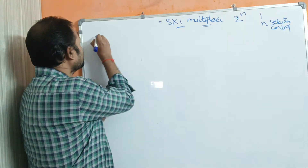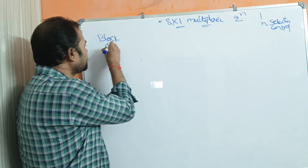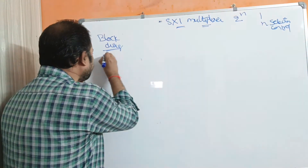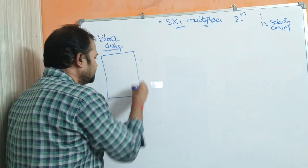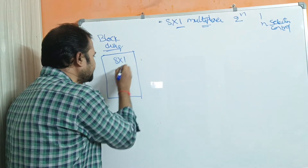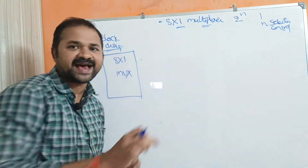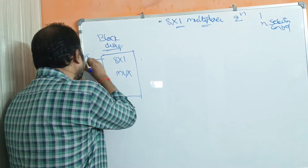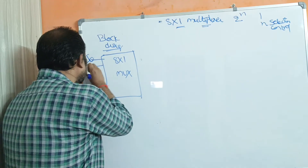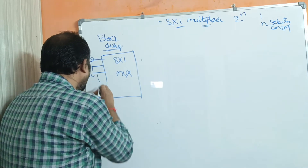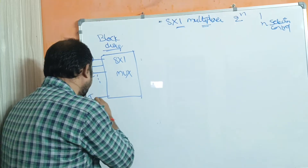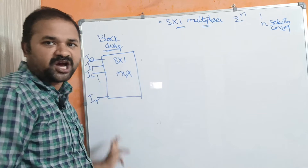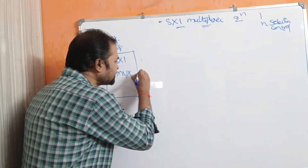Let us see the block diagram of the 8 by 1 multiplexer. The name itself specifies the meaning. An 8 by 1 multiplexer, also called a MUX, has 8 inputs and produces one output. The inputs are i0, i1, i2, and so on up to i7. So the multiplexer has 8 data inputs from i0 to i7 and produces only one output.